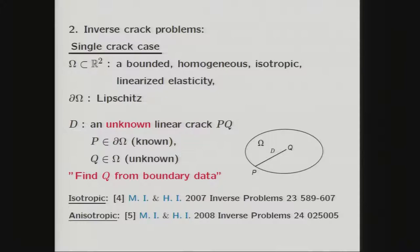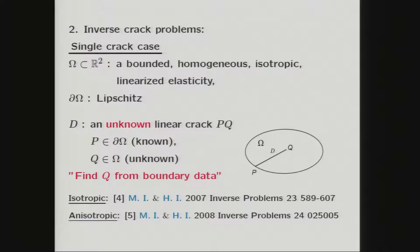We treat the case of a single crack. Let Omega be a bounded domain in R² with Lipschitz boundary, representing a homogeneous isotropic linearized elastic plate. Let D be an unknown linear crack, denoted by PQ. We assume one tip P is known and located on the boundary, and the other tip Q is unknown, located somewhere inside Omega. Applying surface force on the boundary and observing the corresponding data on the boundary, our problem is to find the location of point Q from this boundary data. This result can be extended to the anisotropic case.